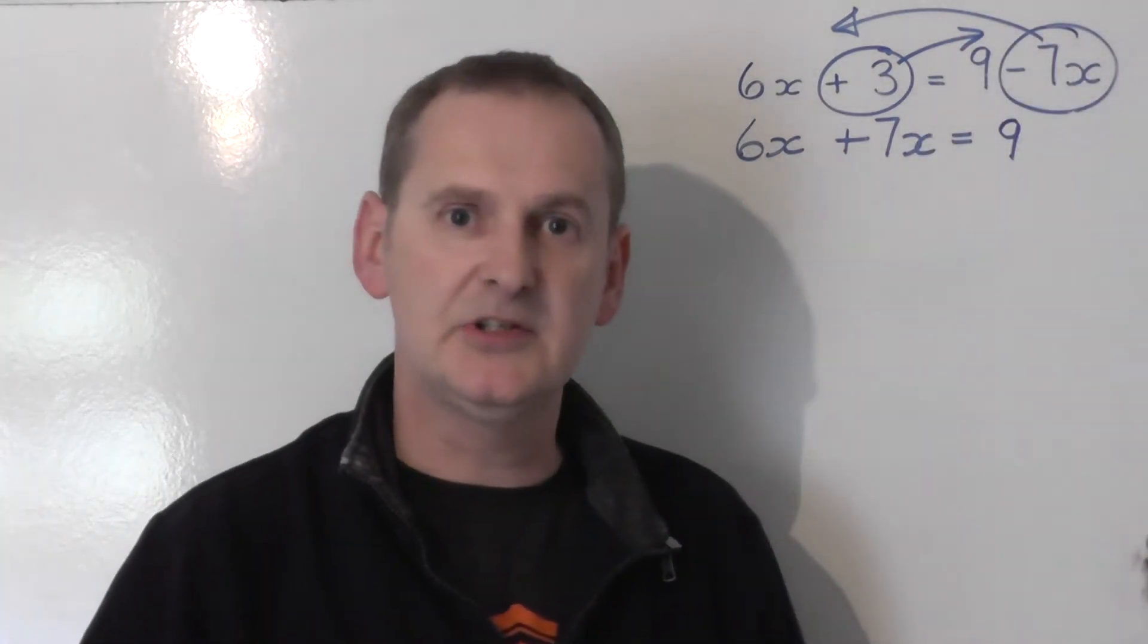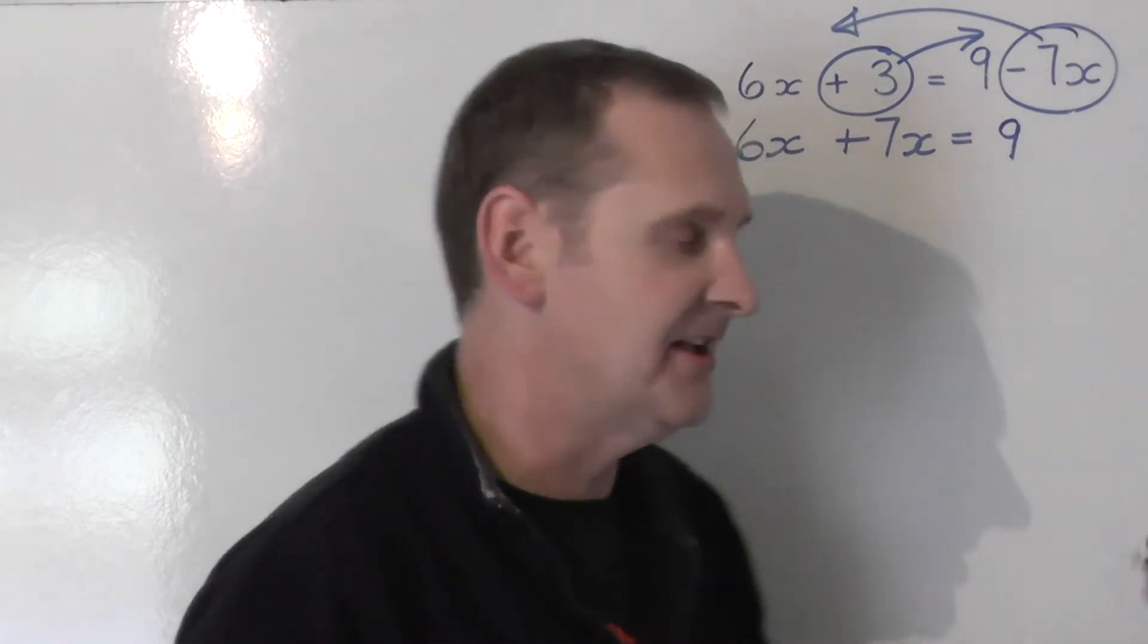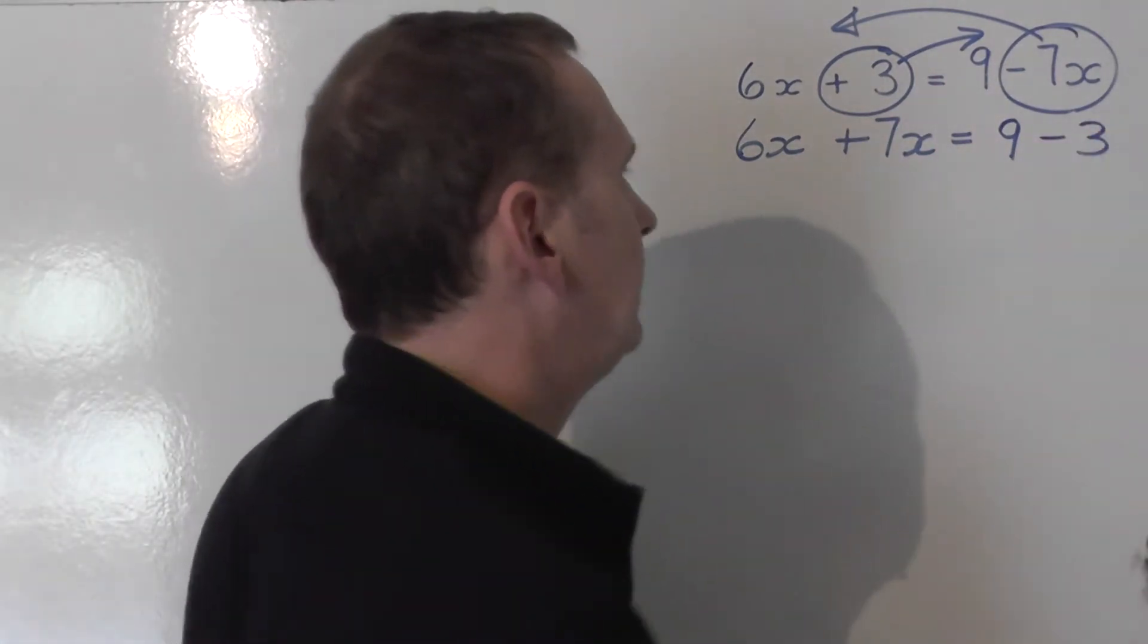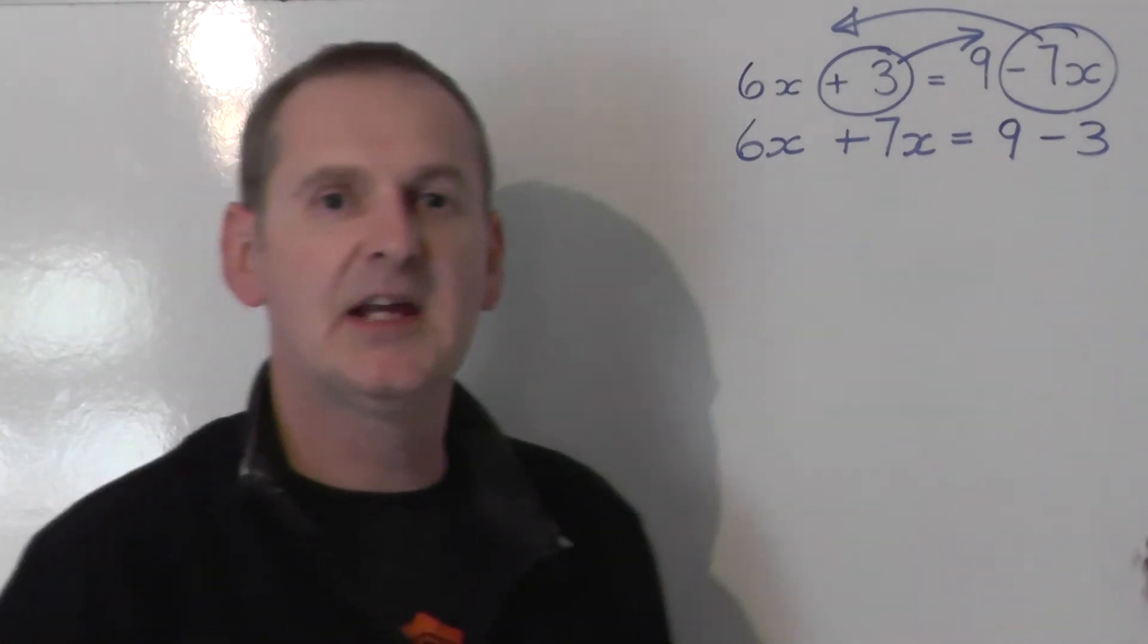I'm now going to take the plus 3 and drag that across to join the 9 on the other side. It swaps sides, so it swaps signs. So the plus 3, change it over, becomes minus 3 on the other side. So we get 6x plus 7x equals 9 take 3.